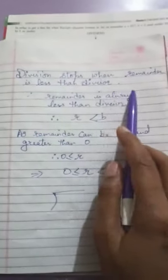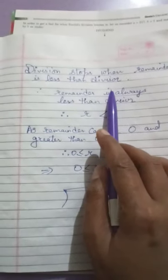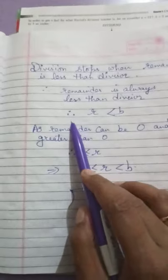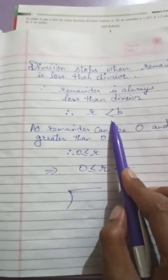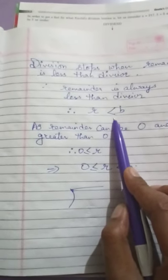As we all know, division will always stop when the remainder is less than the divisor. Your remainder is always less than the divisor. Therefore, R is always less than B, not equal to B, only less than B, because if your remainder equals the divisor...